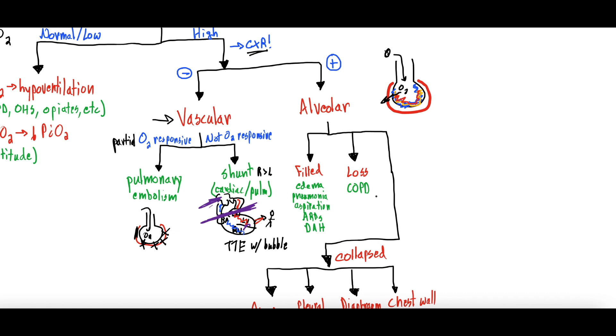You can also have a loss of alveoli with COPD. Essentially you get obstruction of the alveoli, so these alveoli can't really exchange gas well, but we're not going to spend too much time focusing on that because that kind of explains itself.